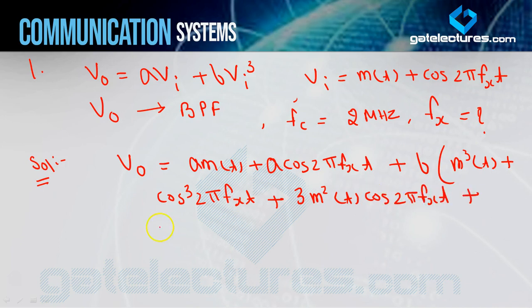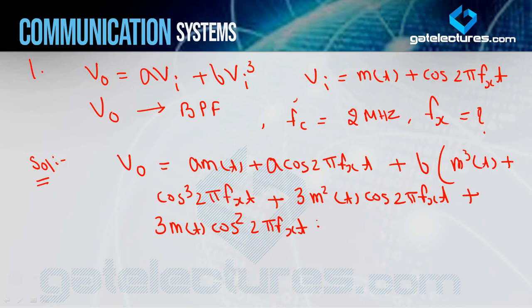Continuing the expansion: plus 3AB² giving 3·m(t)·cos²(2π·FX·t). So we applied the (A+B)³ formula: A³ + B³ + 3A²B + 3AB². These are all the terms in the expansion of V0.